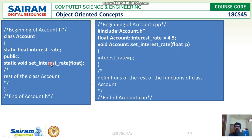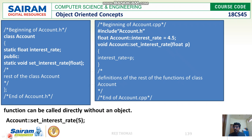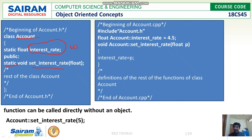Let us see an example. We have a class called account. We have a static data member which is an interest rate, and at the same time we have a static member function which is set_interest_rate. This is my class called account. Without creating an object of the class account, I can access the two members which are static — one is my static data member and the other is my static member function. Look at this — we have accessed these directly.